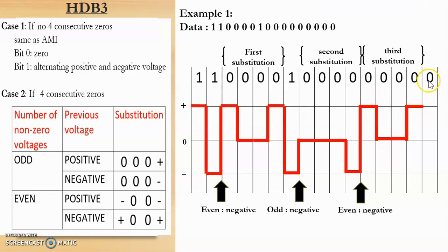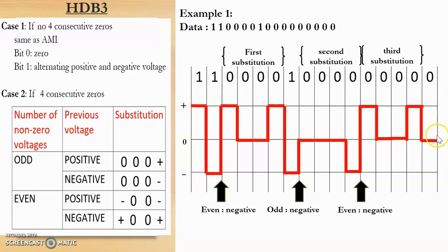The next bit is 0, and at this point there are no 4 consecutive zeros. We use case 1: same as AMI. According to AMI, if the bit is 0 it will be at the 0 voltage level. So this bit 0 will be at the 0 level. This is the complete digital signal for the given data using HDB3.